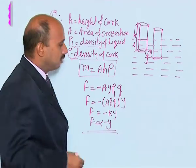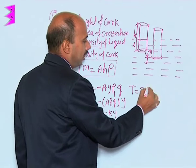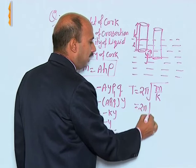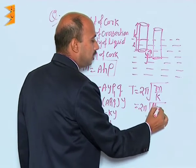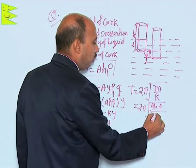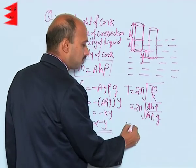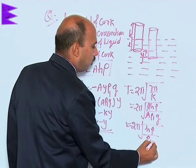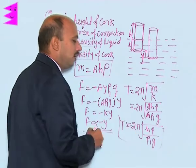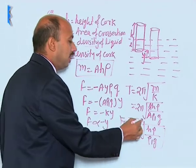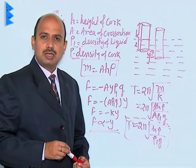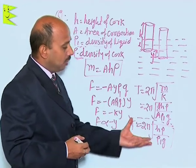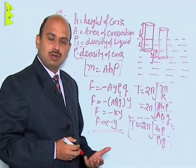That means the motion of the cylinder is simple harmonic. We can now calculate its time period. T = 2π√(m/k). Substituting: T = 2π√(Ahρ / Aρ₁g). The area A cancels, giving T = 2π√(hρ / ρ₁g). This is the time period, calculated by applying the concept of restoring force including the upthrust. You can also obtain the frequency if required.